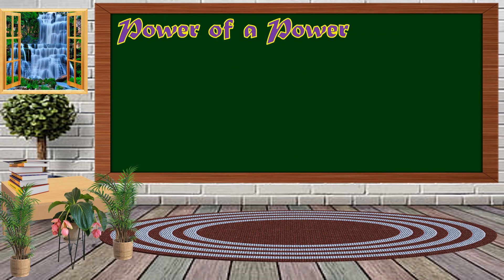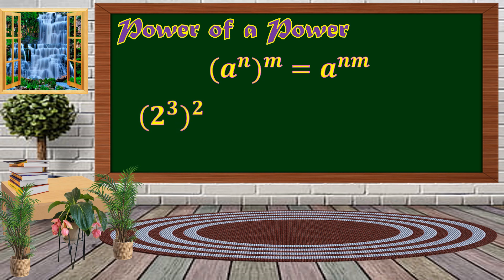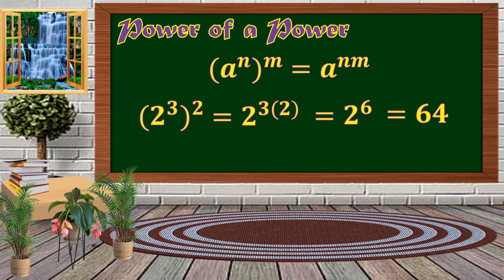Next, we have Power of a Power. We have the quantity 'a raised to n', raised to m. We just multiply the exponents to get 'a raised to n times m'. For example, the quantity 2 raised to 3, raised to 2 — multiply the exponents: 2 raised to 3 times 2, which is 2 raised to 6. And 2 to the 6th power equals 64.